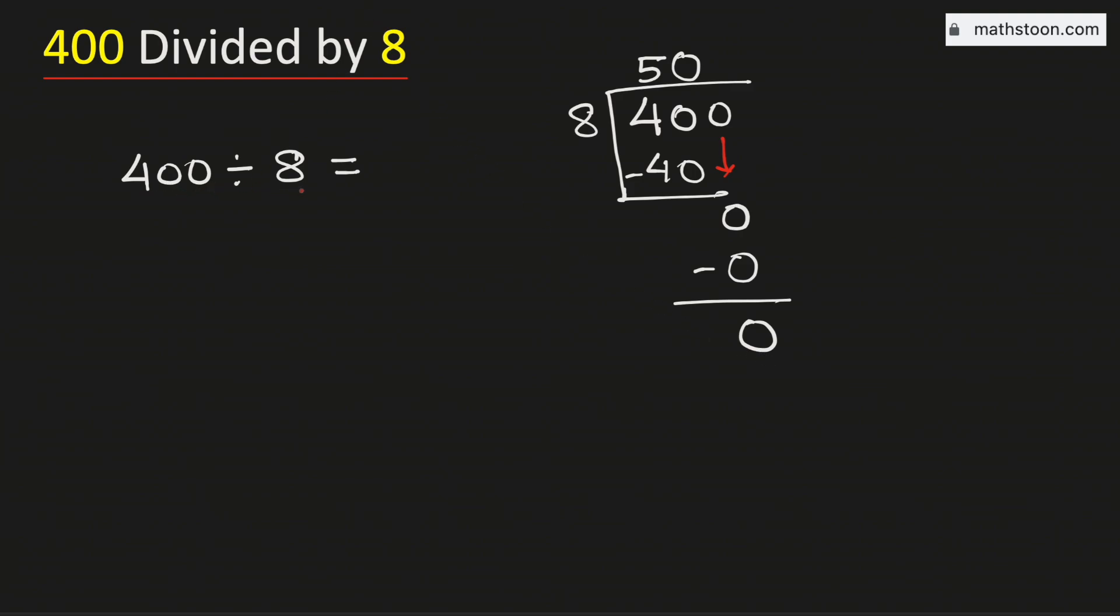So the value of 400 divided by 8 is equal to 50. And this is our final answer. Thank you for watching. Please like, share and comment on the video. Also subscribe to the channel.